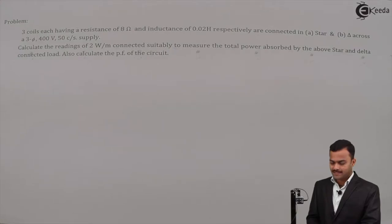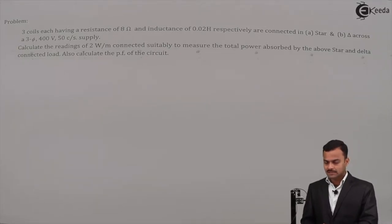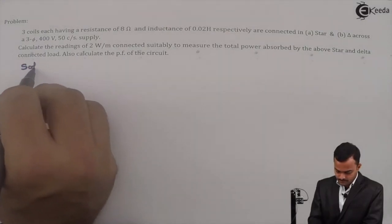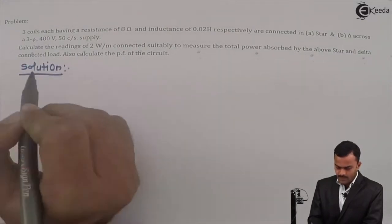The supply is 400 volt, 50 cycles per second. Calculate the readings of two wattmeters connected suitably to measure the total power absorbed by the above star and delta connected load.